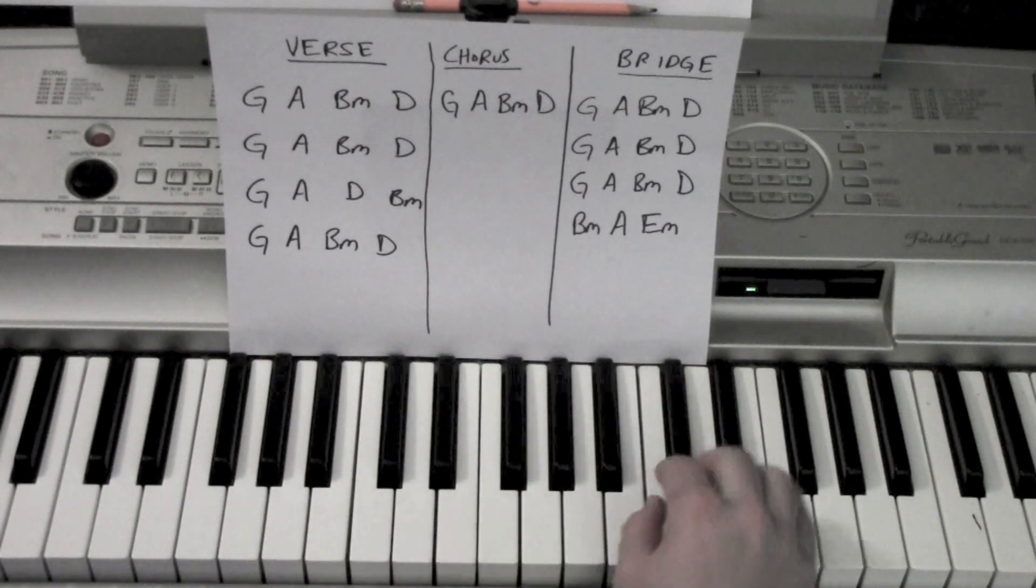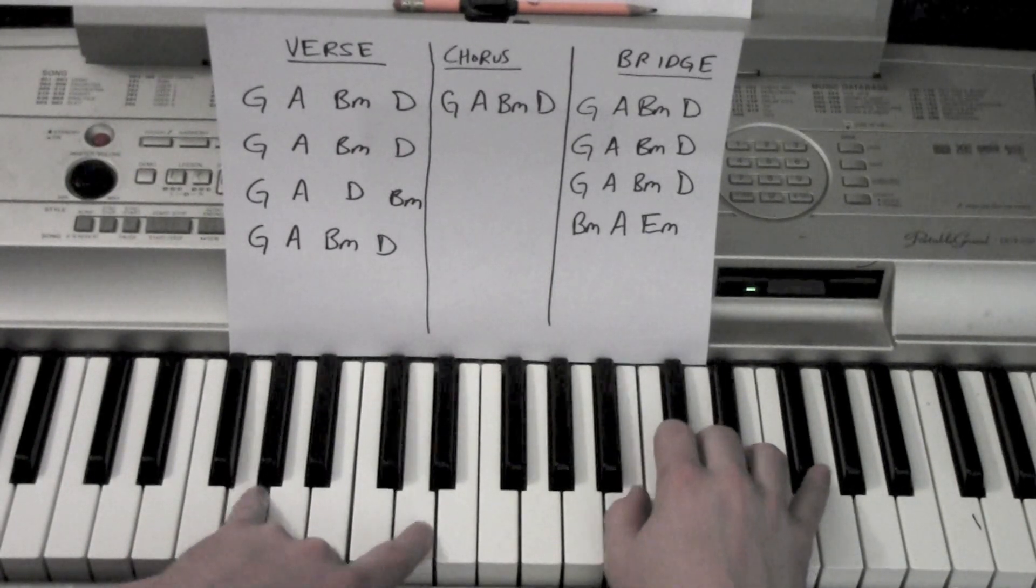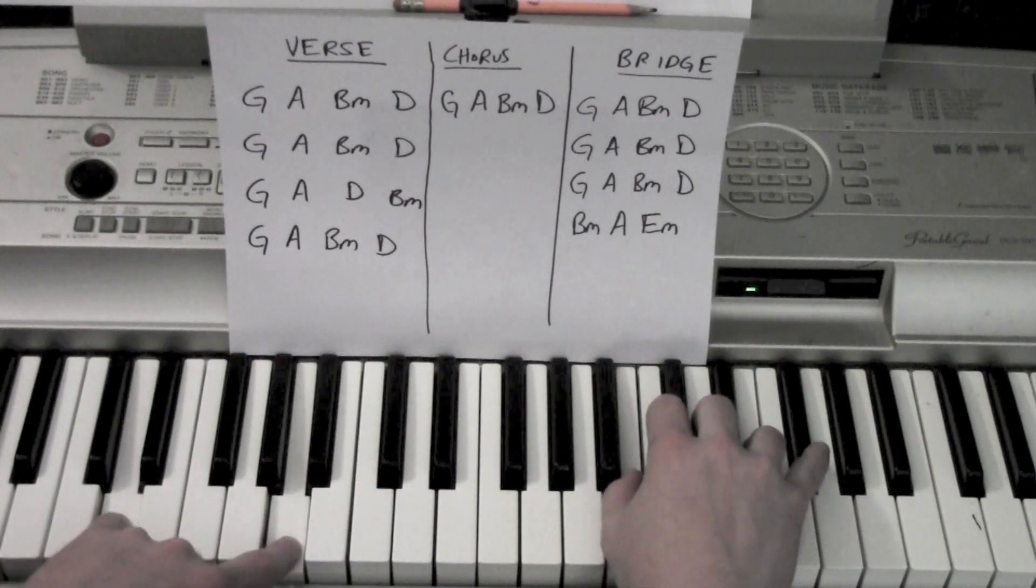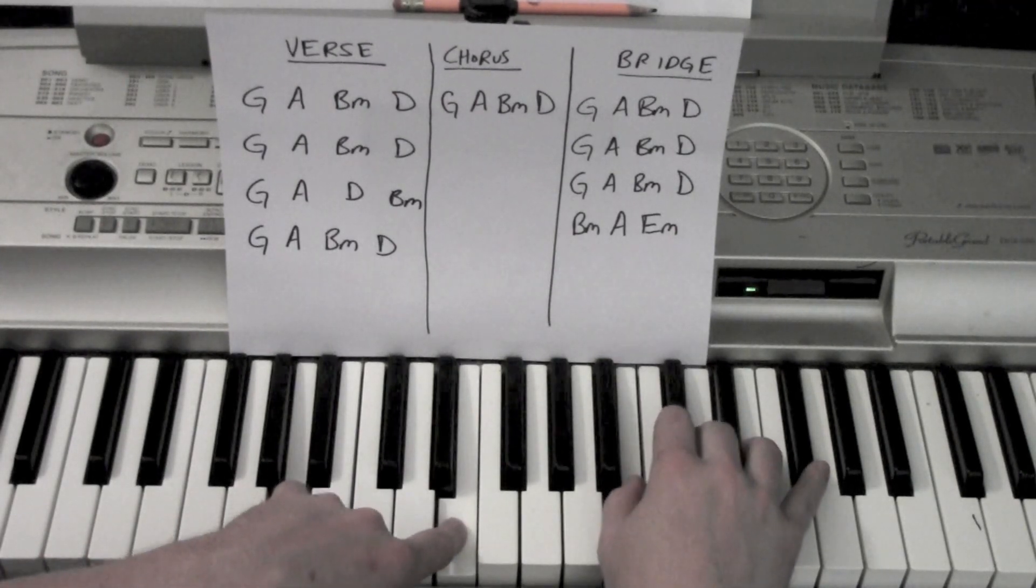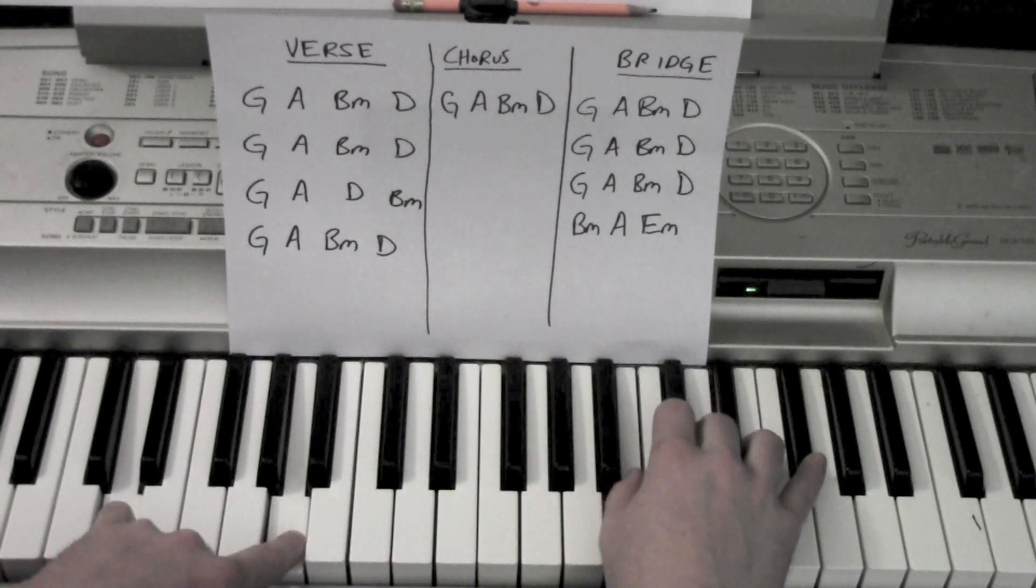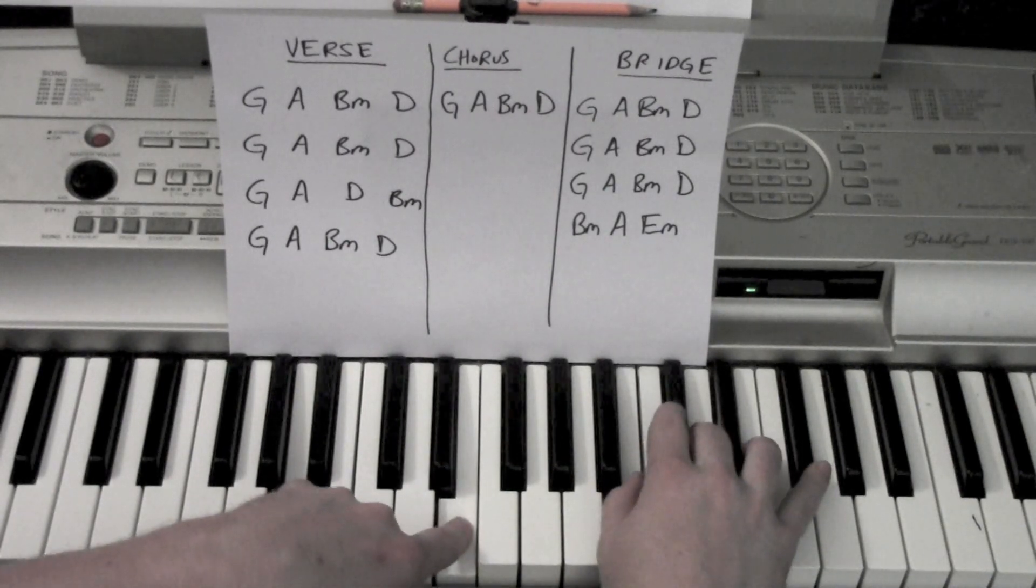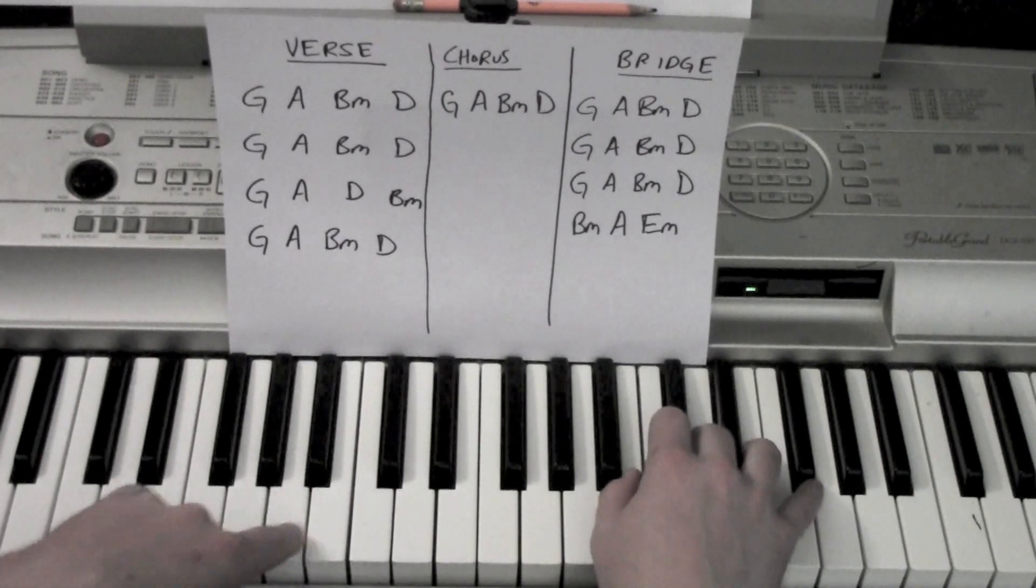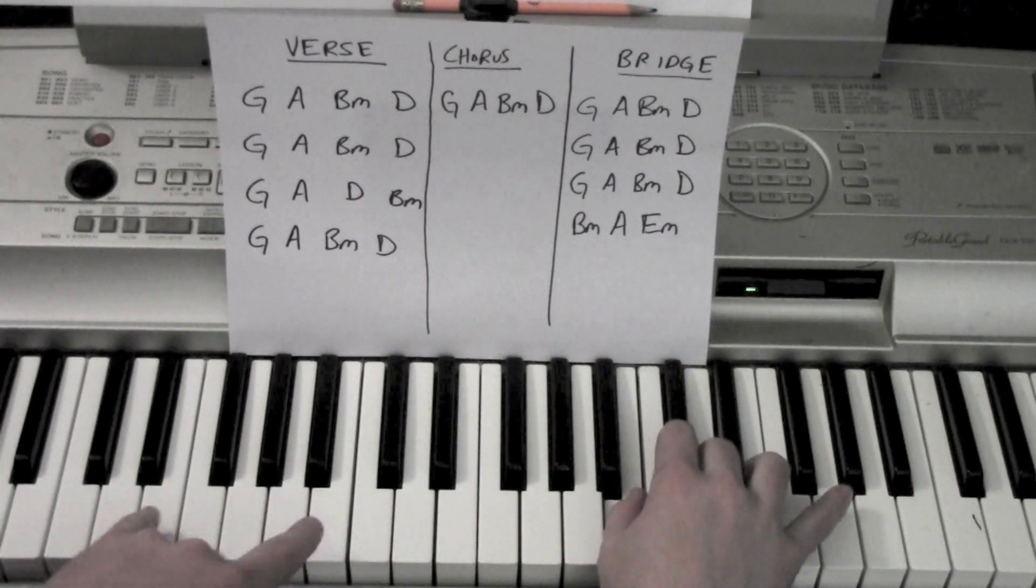Starting from the G: Dear Lord, when I get to heaven (A), please (B minor) let me bring my mind (D). When he comes (G), tell me that you let me (A), father (B minor), tell me if you can (D). Oh that grace (G), oh that body (A), oh that face (B minor), makes me want to party (D). He's my son (B minor), he makes me shine (A) like diamonds (E minor).